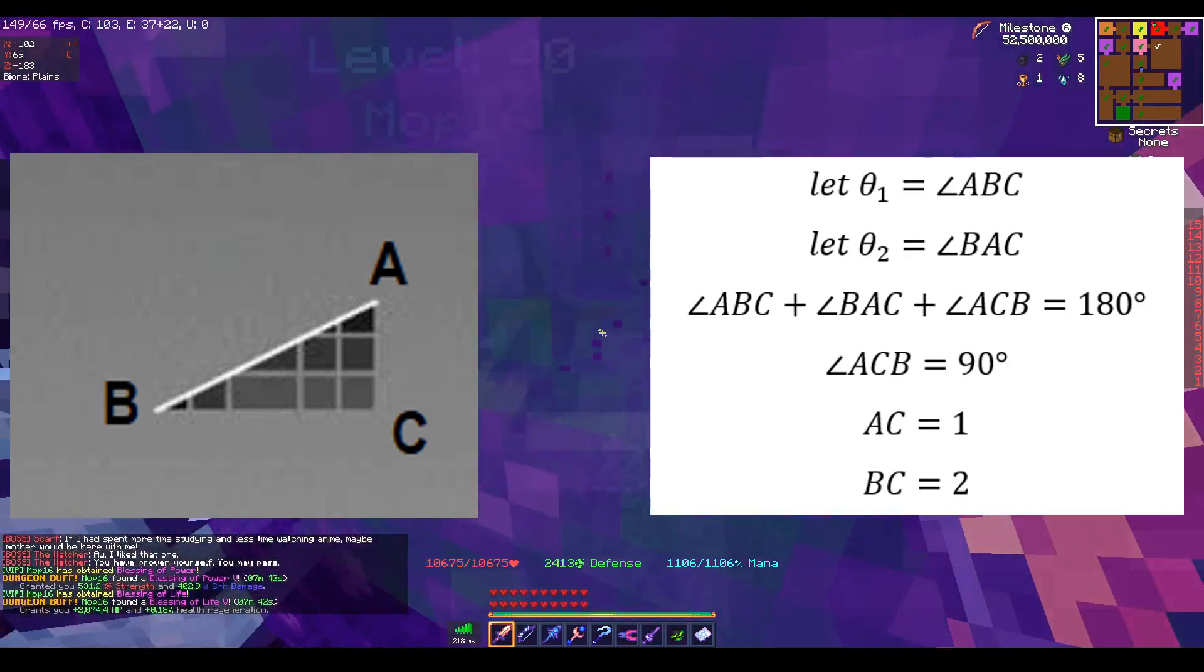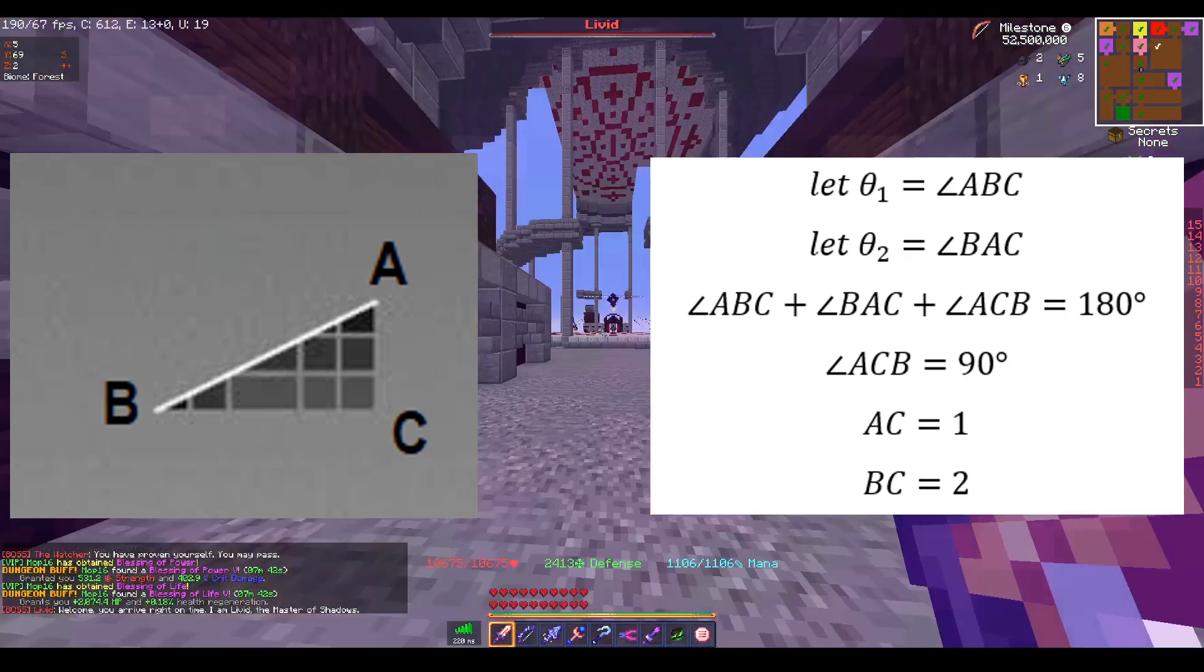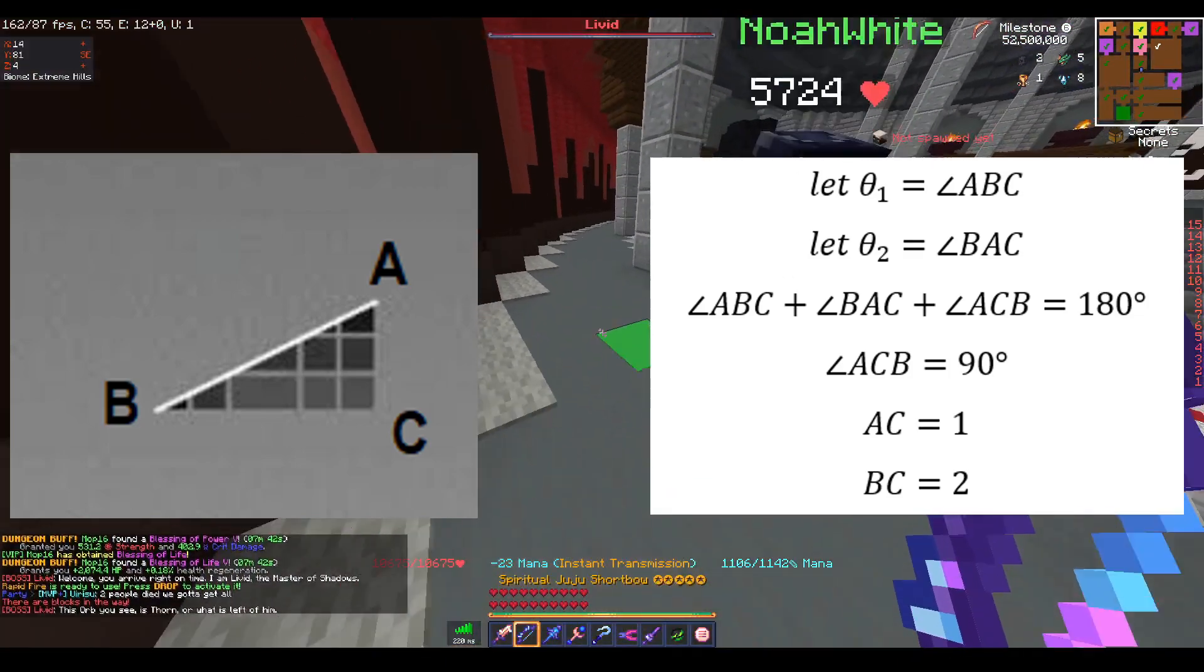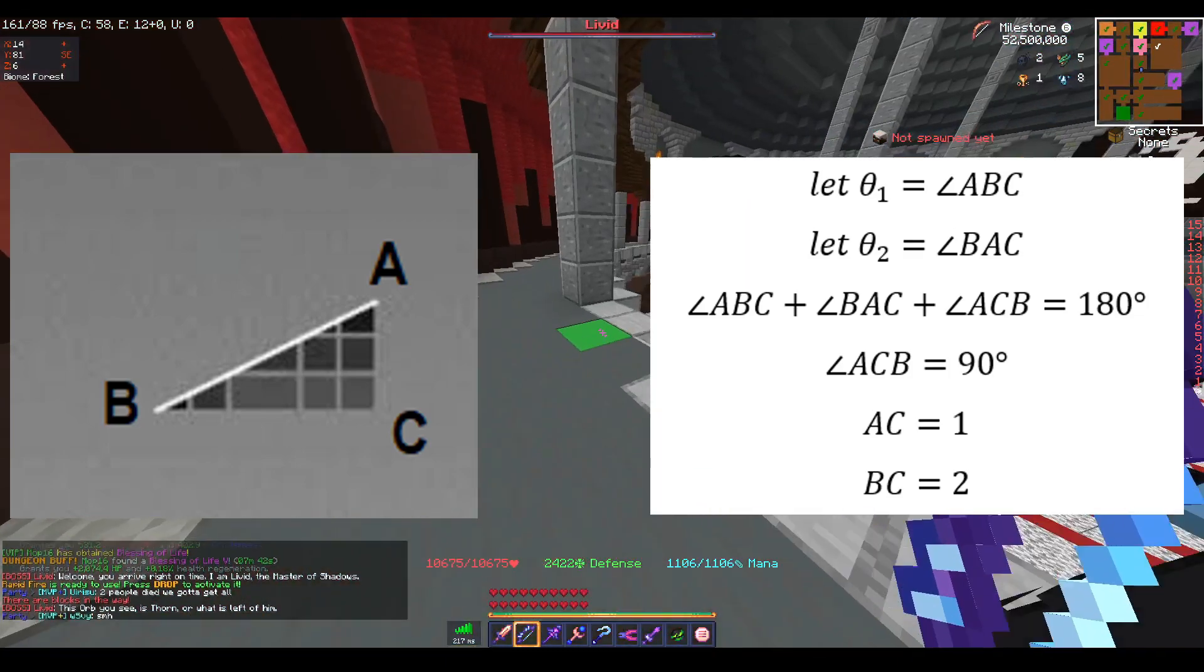The first six lines are of course the definitions of the angles, the sum of all the angles of the triangle, two of the sides, and the given one angle is a right angle.